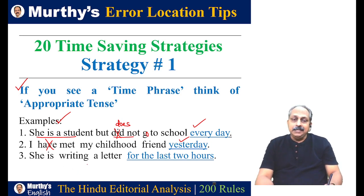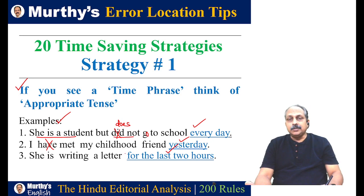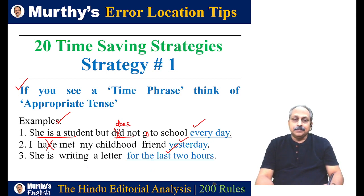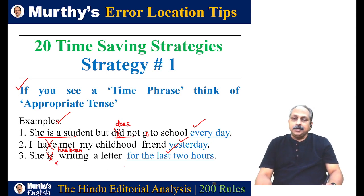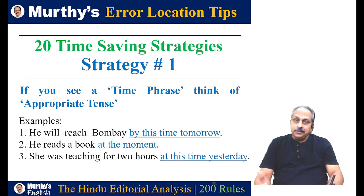Look at the third example: 'She is writing a letter for the last two hours.' Time phrases like 'for the past two hours,' 'for the last two hours,' or 'for the past two months' go with present perfect continuous tense. But here 'she is writing a letter' is in present continuous — not correct. We have to use present perfect continuous tense: 'She has been writing a letter for the last two hours.' Then the sentence is correct.